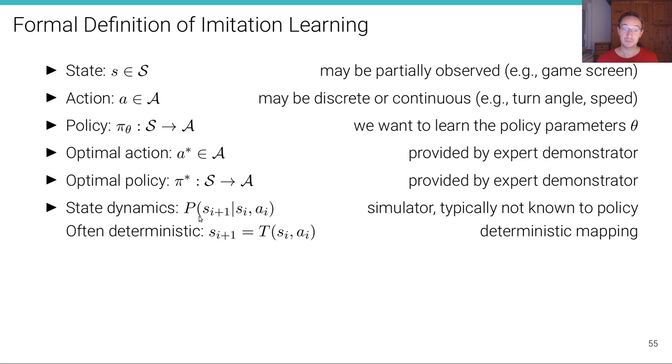And they might be probabilistic. That's why we have a state distribution here over potential outcomes. But often we just assume a deterministic function where for a particular state and action pair, we're deterministically transitioning into a particular new state S.